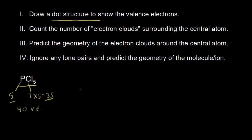Phosphorus goes in the center because it is not as electronegative as chlorine, and we have 5 chlorines. We go ahead and put our 5 chlorines around our central phosphorus atom. If we count how many valence electrons we've drawn so far: 2, 4, 6, 8, and 10. So 40 minus 10 gives us 30 valence electrons left over.